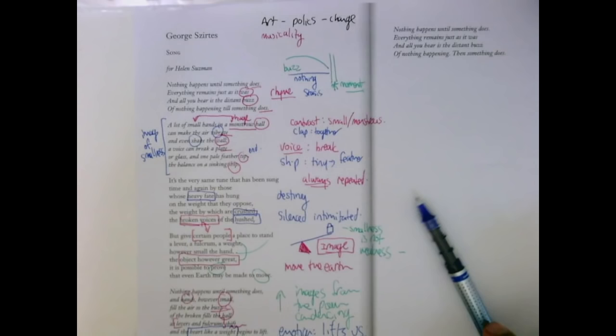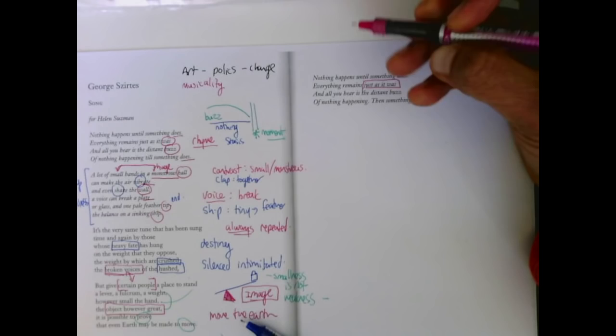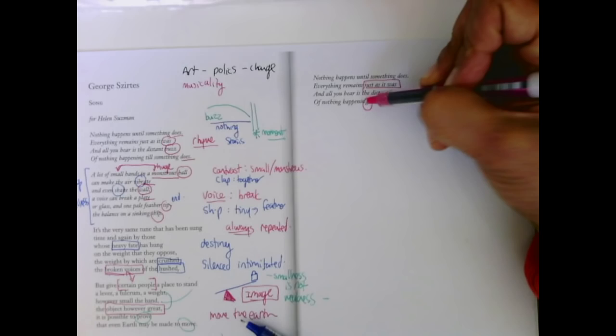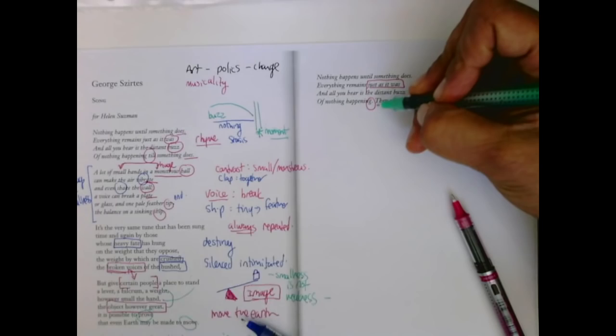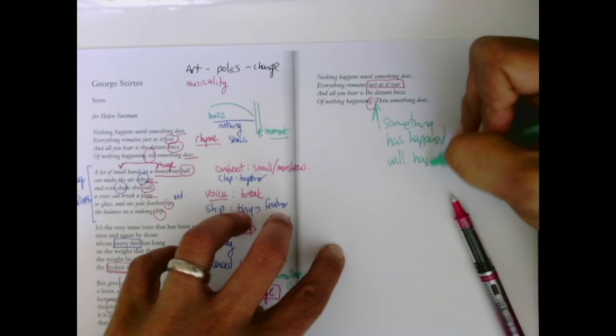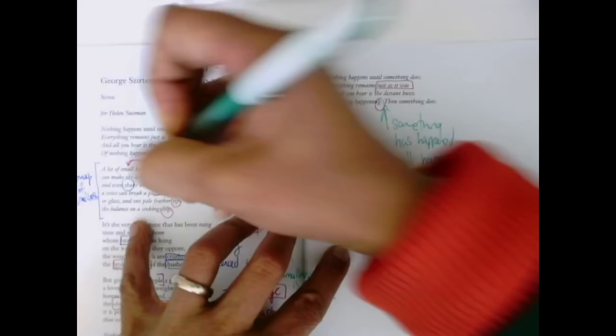Passion takes us somewhere else. And nothing happens until something does. Everything remains just as it was. We're repeating the first stanza almost entirely, and all you hear is the distant buzz of nothing happening. Then something does. This punctuation changes. The till turns into a stop. What's the effect? Here we get something has happened. Something has happened. Something will happen. At the beginning of the poem, it's speculation. But by the end of the poem, we have this concept of the political.